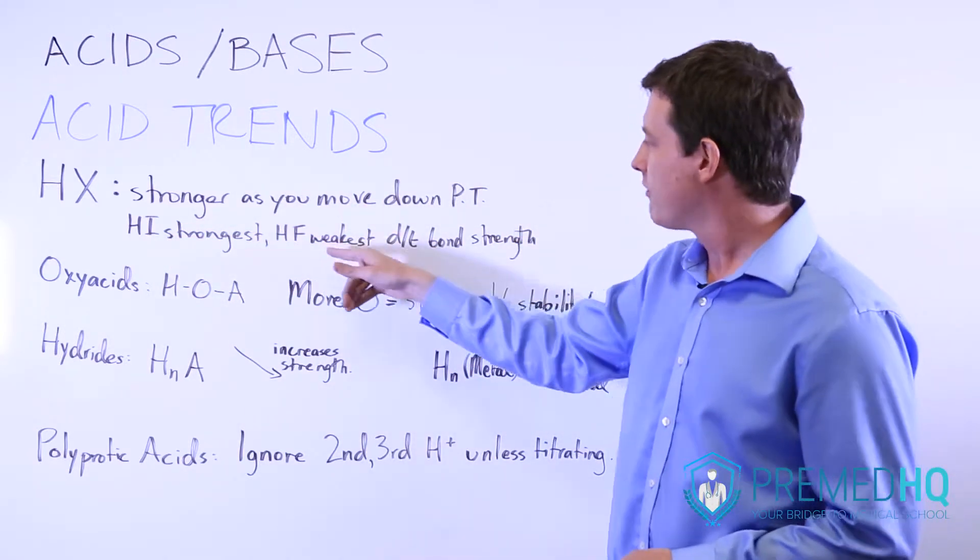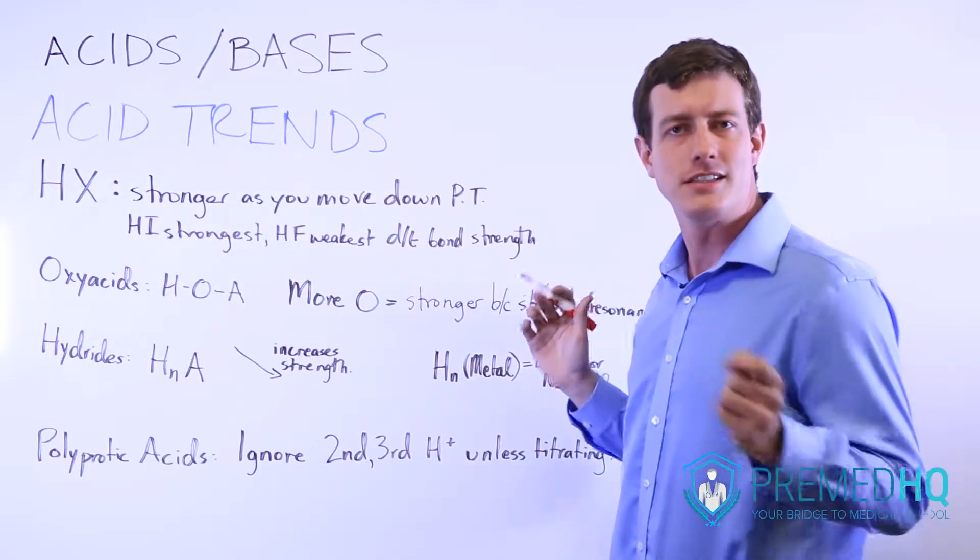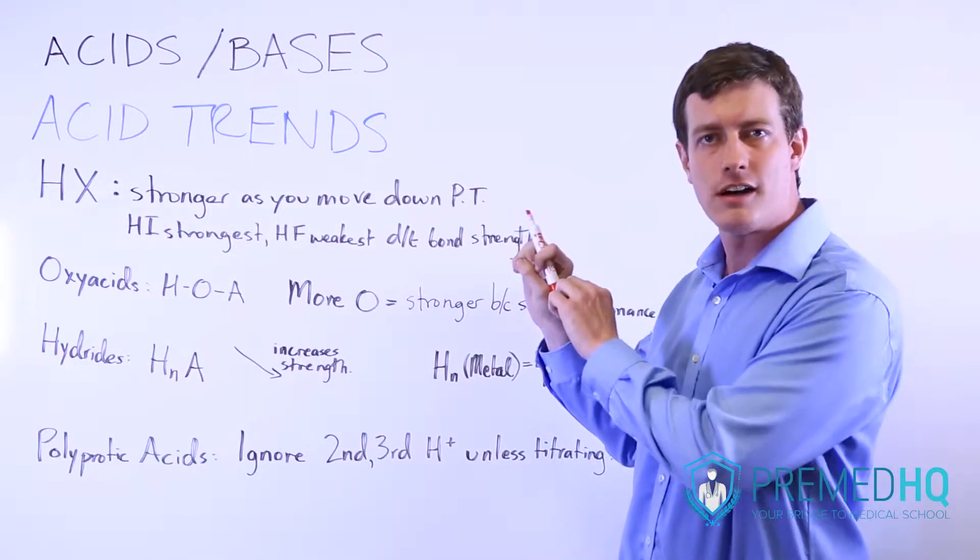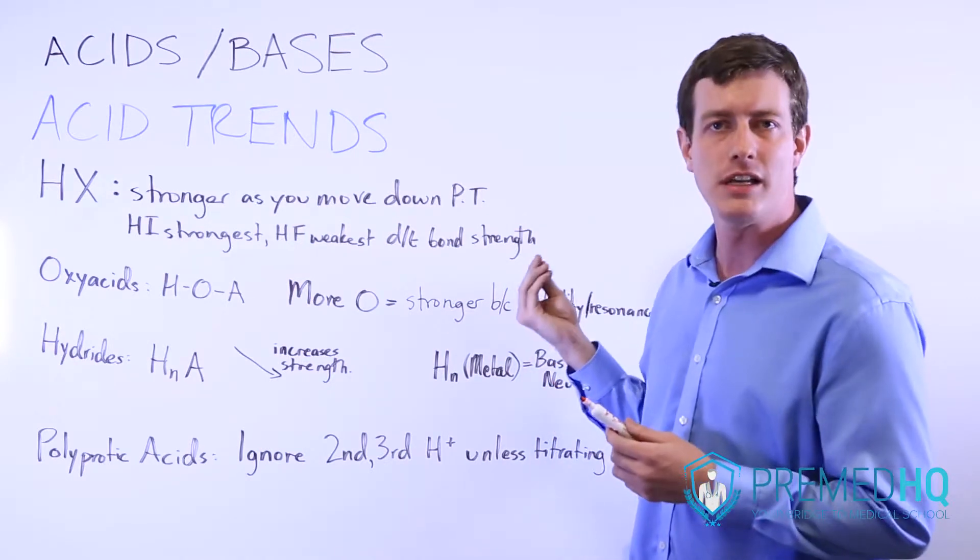Whereas HF is the weakest due to its very strong bond strength. It's less likely to dissociate partly due to the small radius of the fluoride and also due to the electronegativity of it.